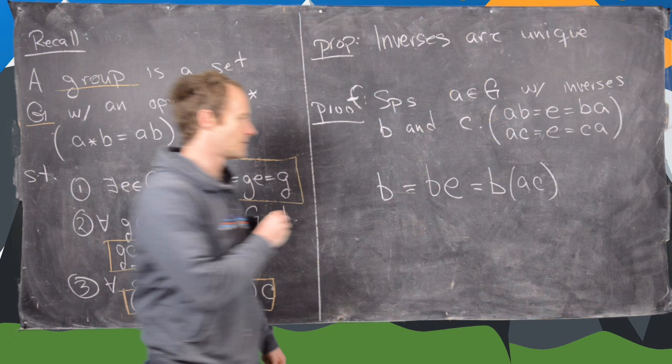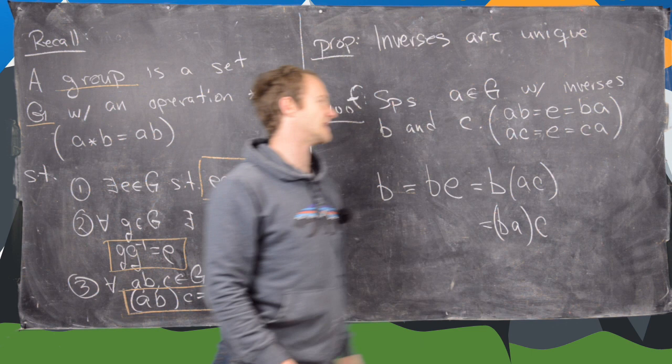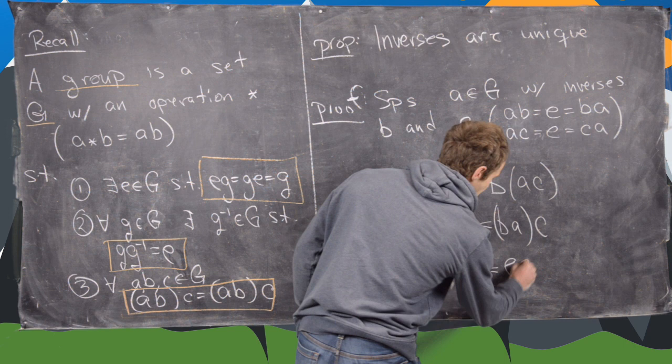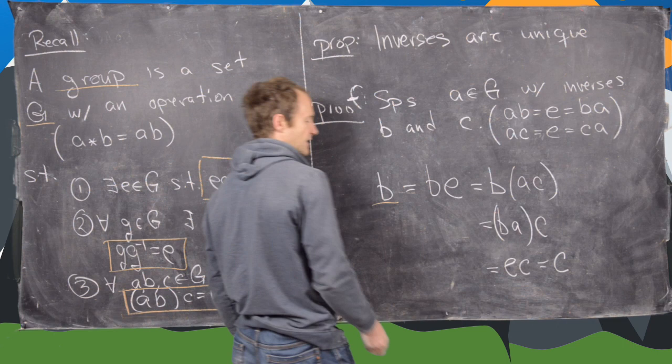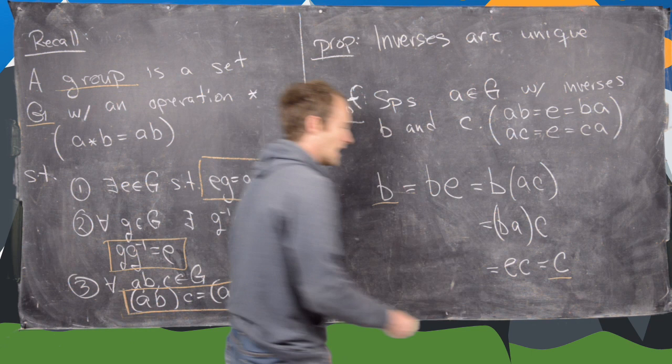But now we can re-associate. This is the same as BA times C by the associativity property. But now we also know that BA is the identity because B and A are inverses. So that gives us E times C which is the same as C. So now look at the extreme left and extreme right hand side of this equation. And we've shown that if we have two inverses of an element A they are in fact the same thing. In other words there is only one inverse to any element of a group and the inverses are unique.